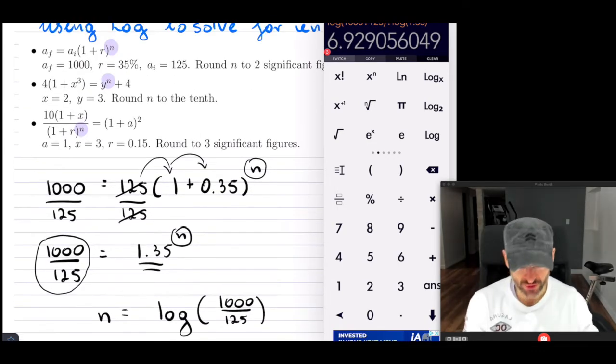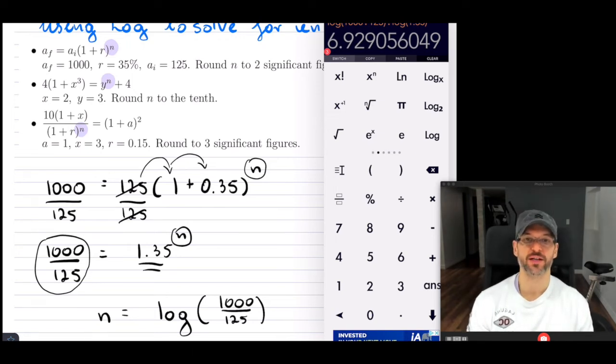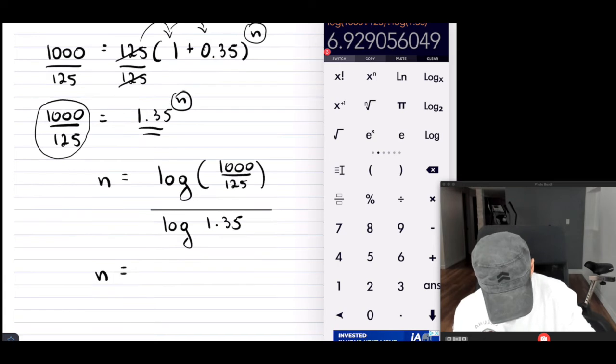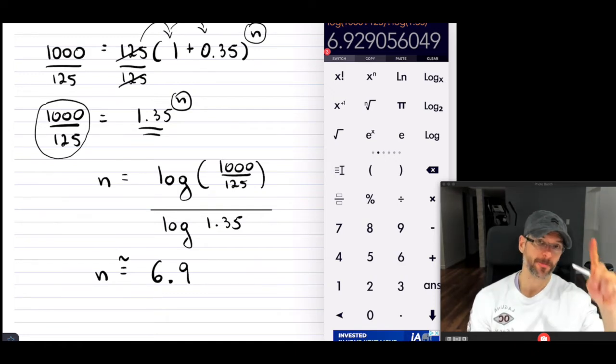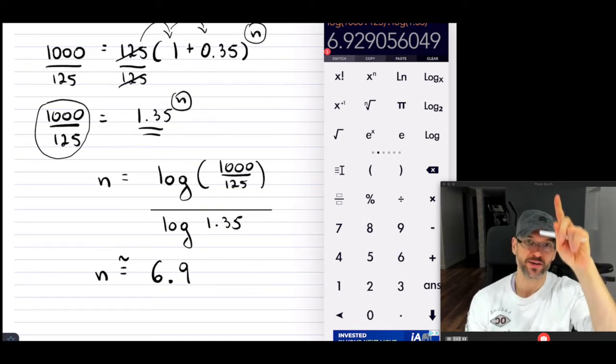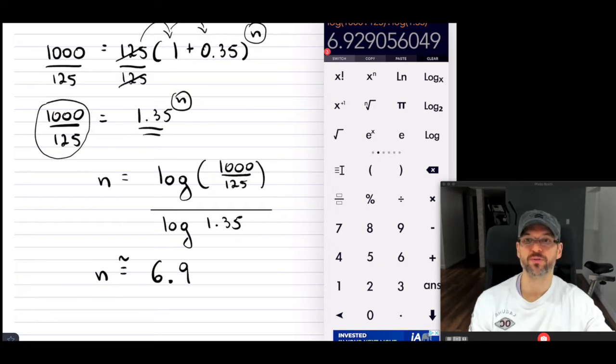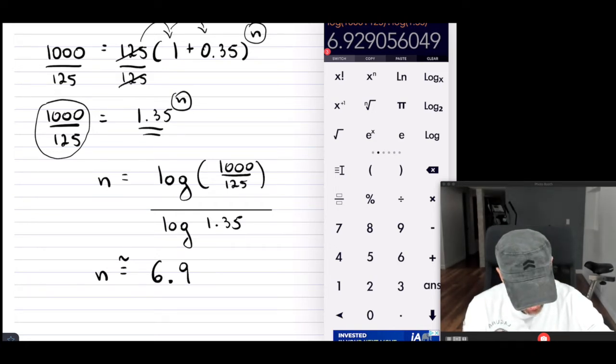So 1,000 divided by 125. That's in my numerator. Then divided by log of 1.35 equals. So now I have N equals to. Now, it said that we're supposed to round this to two significant figures. It's 6.929. So my answer is going to be rounded 6.9. So approximately because I'm rounding. And that's because there's a 2 behind the 9, so it's not going to raise the 9 up. So this would have been the answer for us to two significant figures.